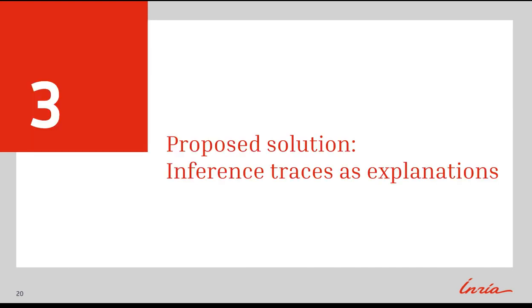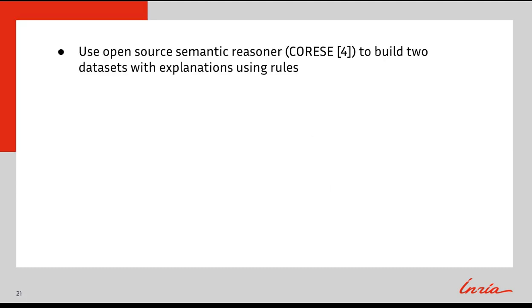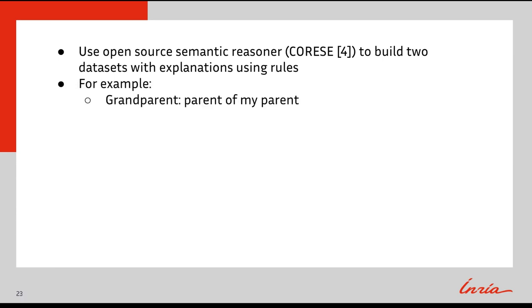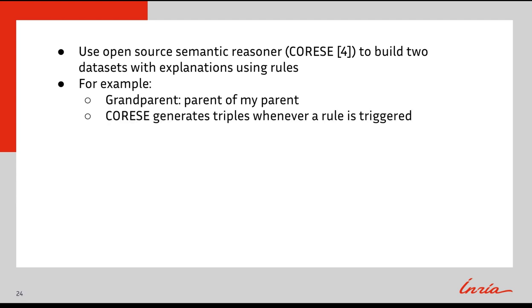Our proposed solution is to construct a general approach to building datasets with explanations, where each observation has one and only one associated explanation. In order to do this, we use an open-source semantic reasoner, CORAS, to build a dataset with explanations using rules. Using this semantic reasoner, we can, for example, define the grandparent relation using the parent of a parent. CORAS will then generate new triples in our dataset whenever this rule is triggered.